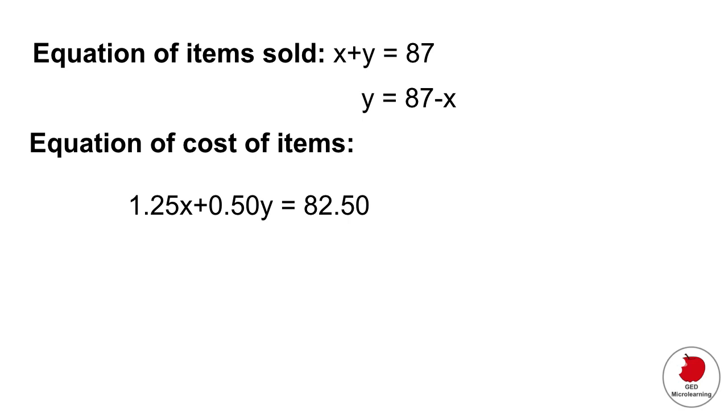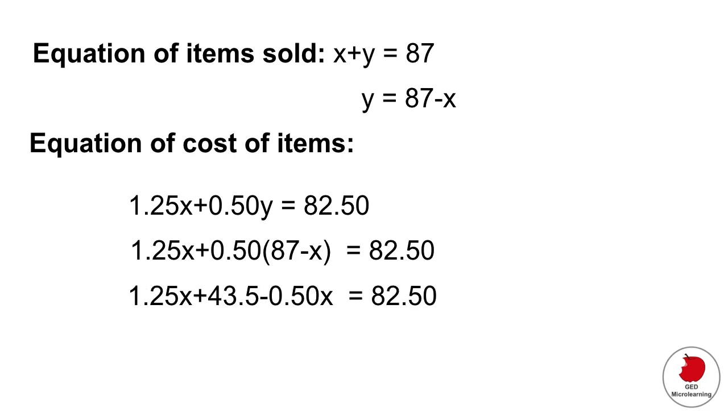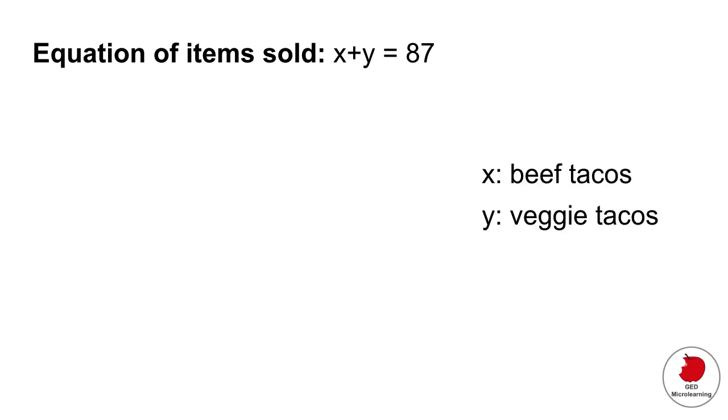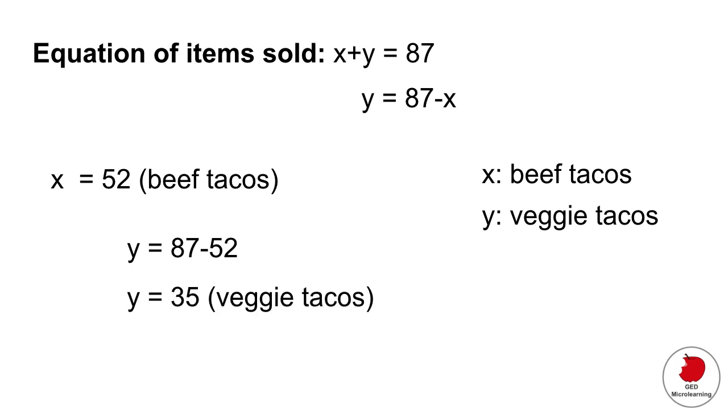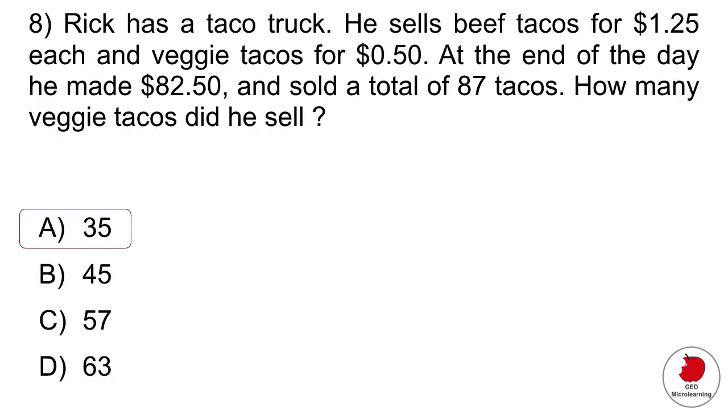Now we're going to take our second equation and we're going to plug the equation that we just figured out the Y into this new equation like that. And then we're going to solve for this. So multiply everything out. Divide both sides by 0.75 and that gives you 52. So if you remember, we said that the beef tacos were X and we just figured out X, which is 52. So now we have to figure out how many veggie tacos he sold. So we would take this equation, which we had at the top, just plug in the 52 that we figured out. And that gives us Y is equal to 35. 35 veggie tacos. This is a system of equations problem and we're using the method of substitution. And this kind of always tricks people a little bit.